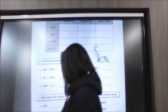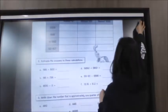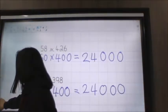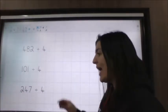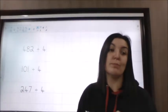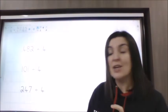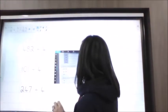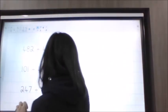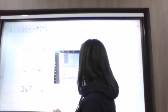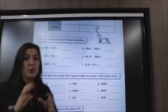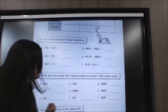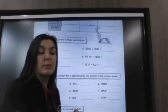And then finally the last section I want to go through with you: you've got to divide all of the numbers by four, because it says you have to write down approximately — which is another word for estimating — one quarter of the number shown.